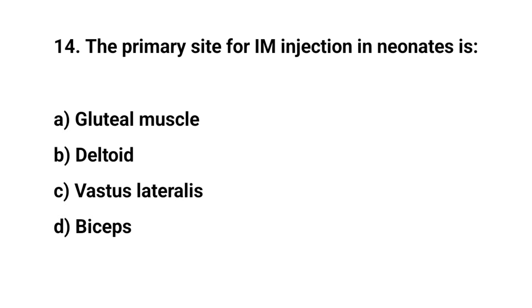Question number fourteen. The primary site for IM injection in neonates is? The right answer is C: vastus lateralis.